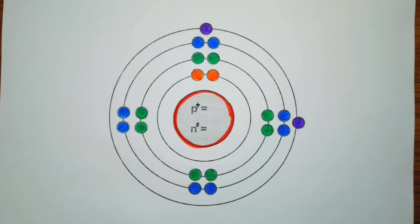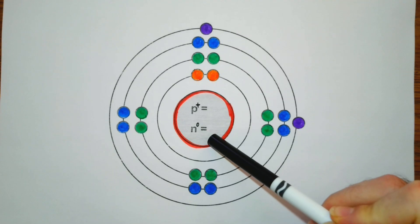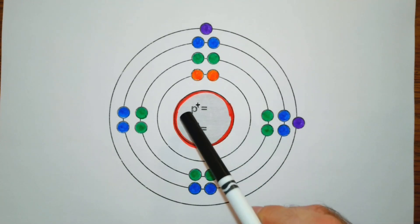When we do a Bohr model, we're going to draw a circle for the nucleus and we're going to indicate the number of protons and neutrons by saying p equals and putting that number of protons, n equals and putting that number of neutrons.